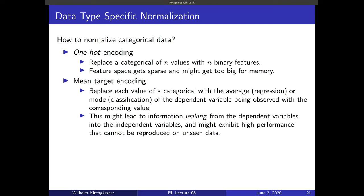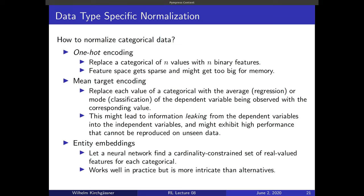A more sophisticated way to normalize categorical data is entity embeddings, which uses a neural network to find an encoding. This is more complicated because we are already doing machine learning before the main machine learning step. It depends on the application — in embedded systems it would be too much computational load, but for competitions it is a popular choice.